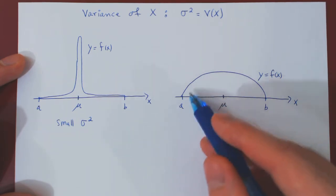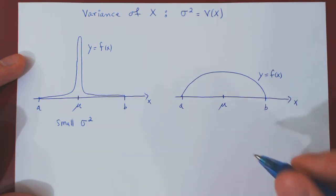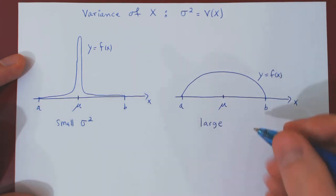As here there is a lot of weight, a lot of area away from the mean, this would be an example of a large, or at least larger, variance.